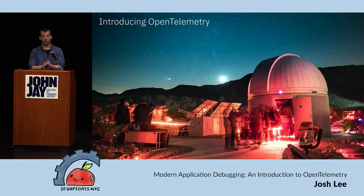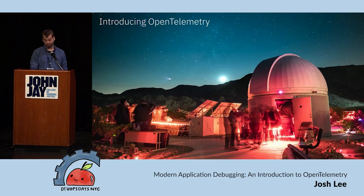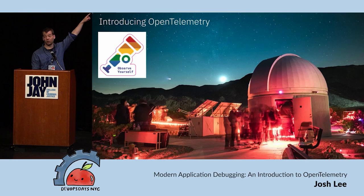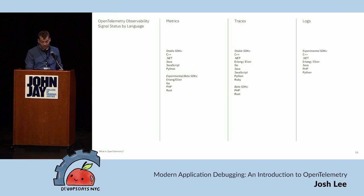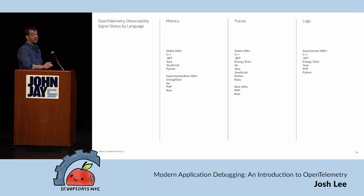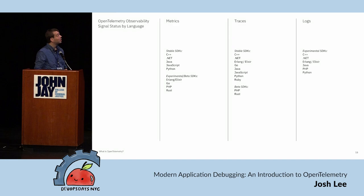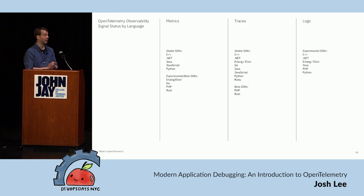That brings us to the OpenTelemetry project, which merged OpenTracing and OpenCensus beginning in 2019 and has been paving the way forward for open source observability as a universal format. Observability is not about signals, but OpenTelemetry very much is. These are the three signals currently supported and how far along they are in the development lifecycle. Tracing is really there — you can use it today in production, and a lot of people are. Metrics are moving along very quickly. Logs are coming — maybe we'll get to talk about that in a more interesting way next year.